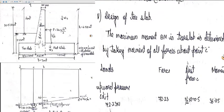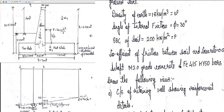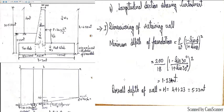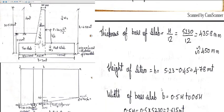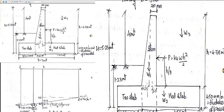Welcome students. In the previous lecture we designed the heel slab, so today we shall design the toe slab. To understand, let us review what we have done in the previous lectures. Initially we started with the design of a cantilever retaining wall. We designed the stem and then the heel slab. Today we shall see how the toe slab is designed.